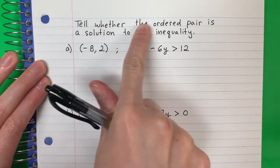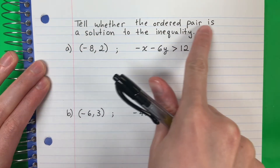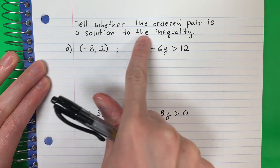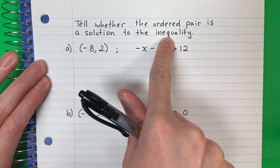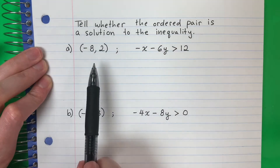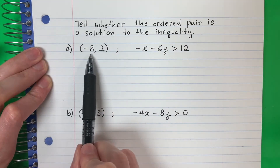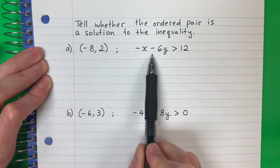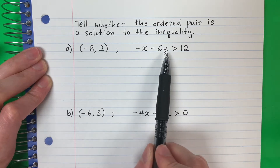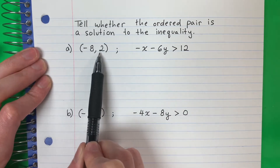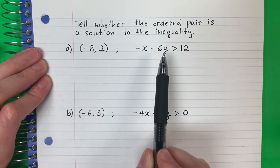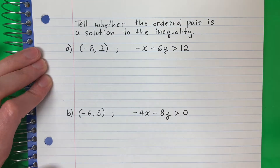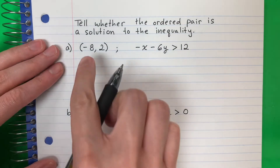Tell whether the ordered pair is a solution to the inequality. I need to see if this ordered pair is a solution to this. Necesito ver si este ordered pair es una solución de esta. So let's go ahead and get started.